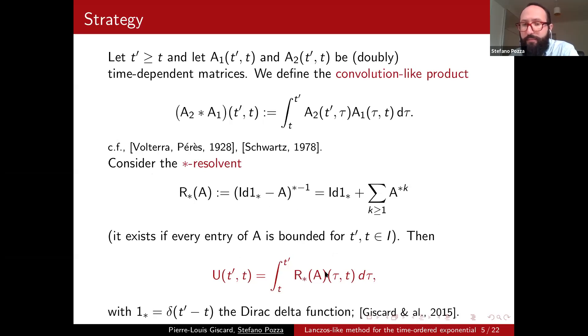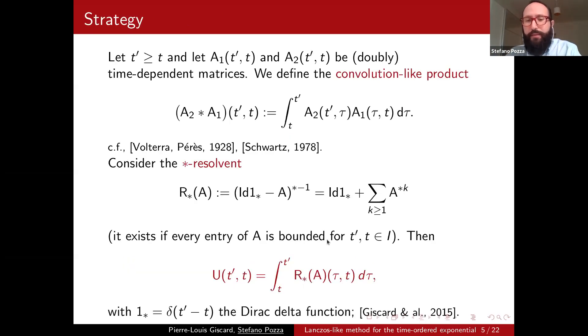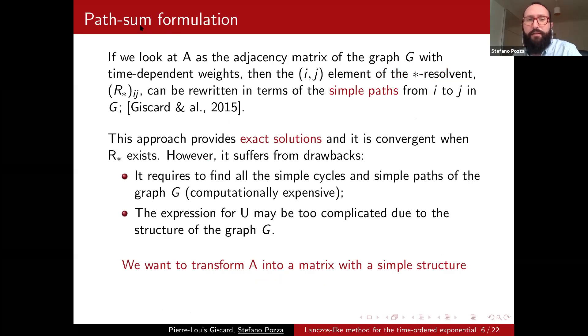So this star resolvent is important because as it was proved by Giscard et al., U, our time-ordered exponential, can be written using this star resolvent by this formula. Here, if you want to know, the identity is the Dirac delta function, but we will have to give a larger discussion. So what we want to do now is approximate the star resolvent instead of U, but to do that is not easy. And actually, the path-sum methods can do that by some complicated graph decomposition.